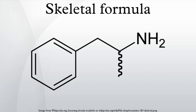The skeletal formula, sometimes called line-angle formula, of an organic compound is a type of molecular structural formula that serves as a shorthand representation of its bonding and some details of its molecular geometry. It is represented in two dimensions, as on a page of paper.